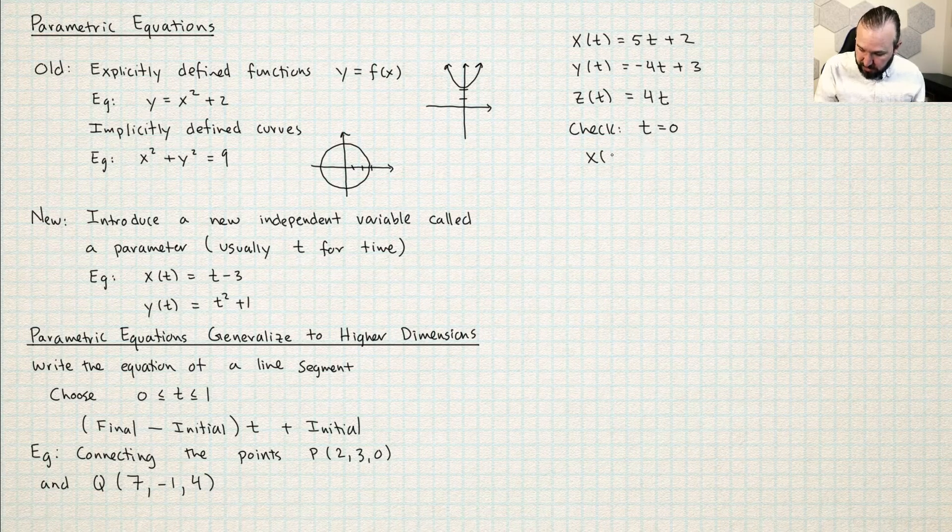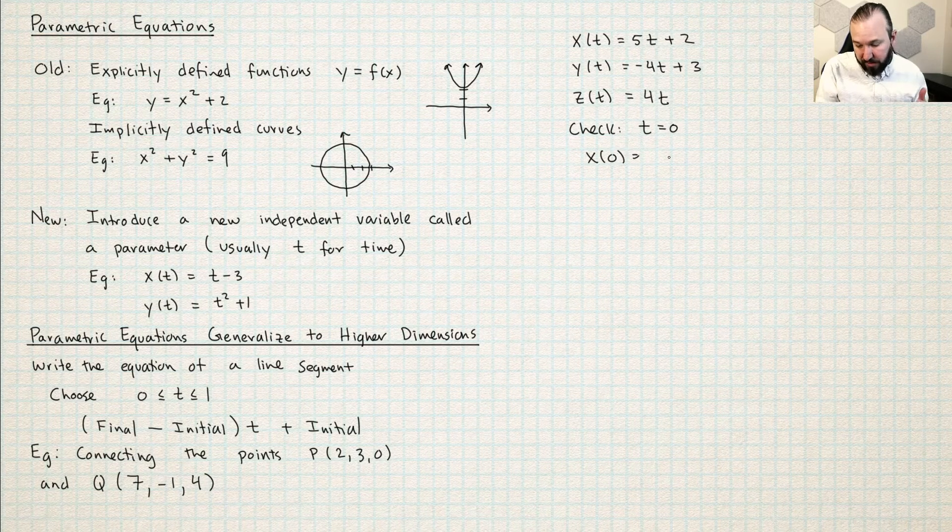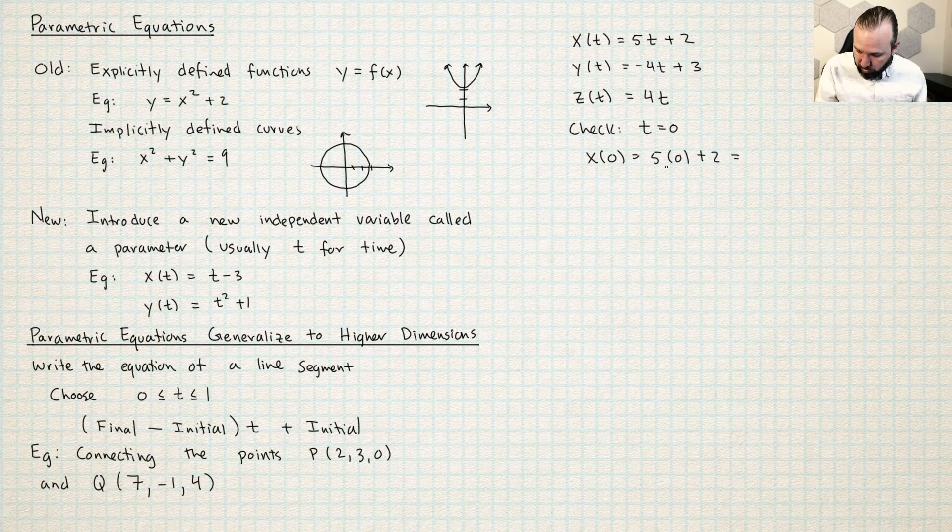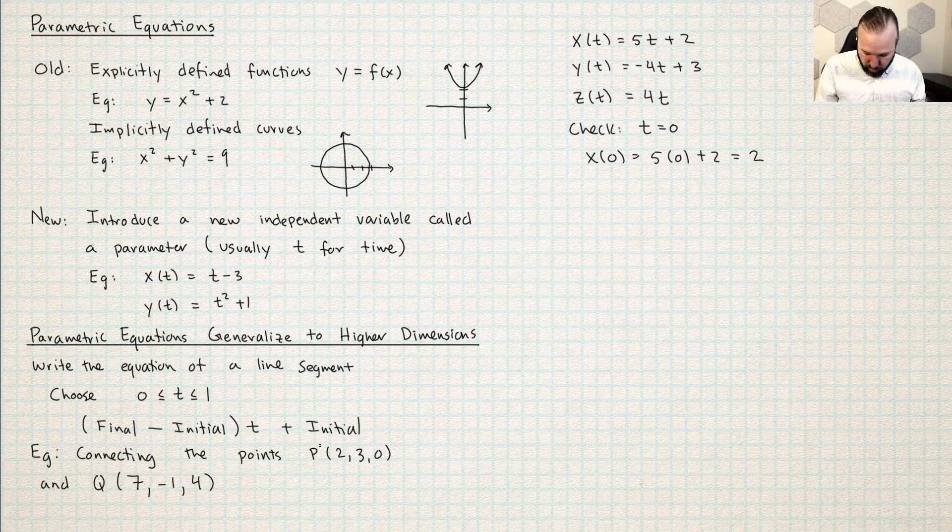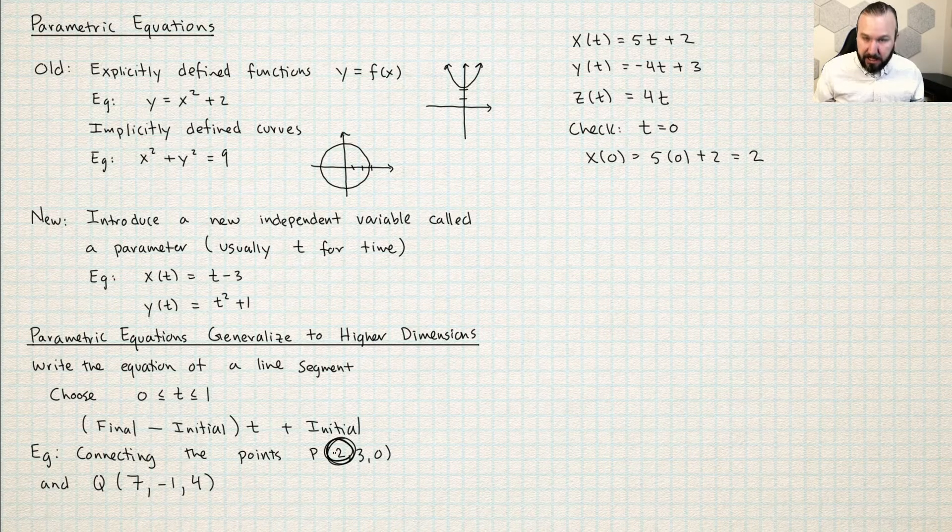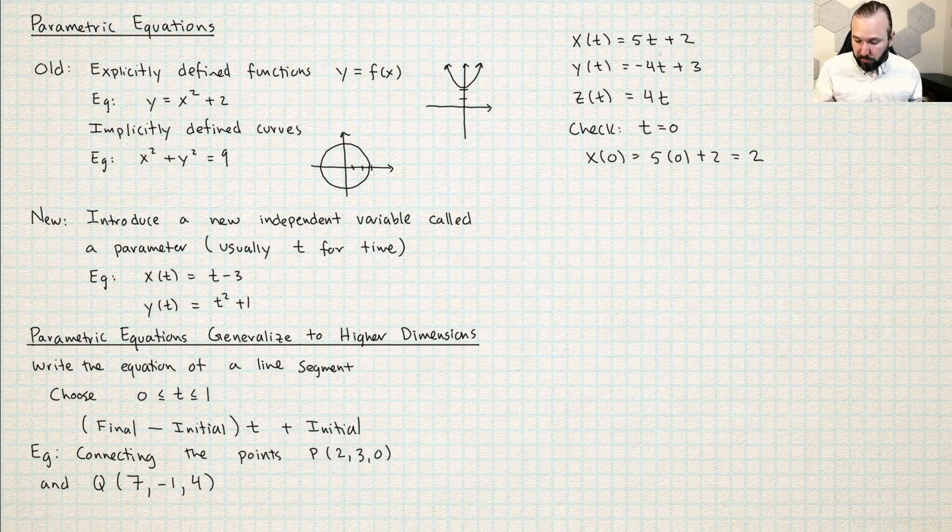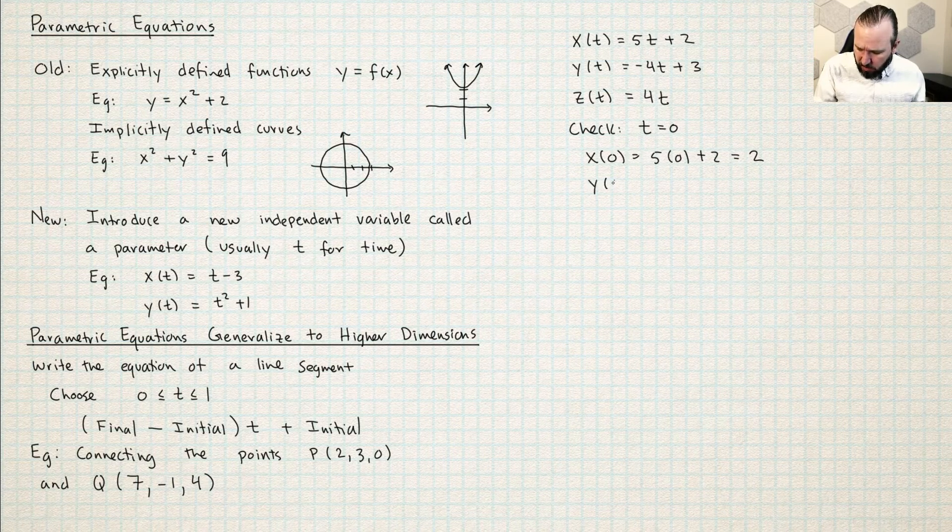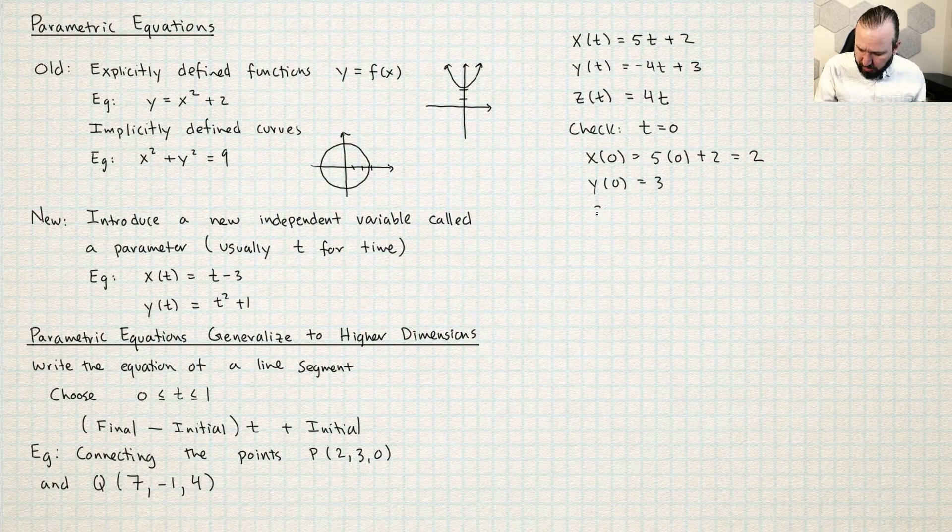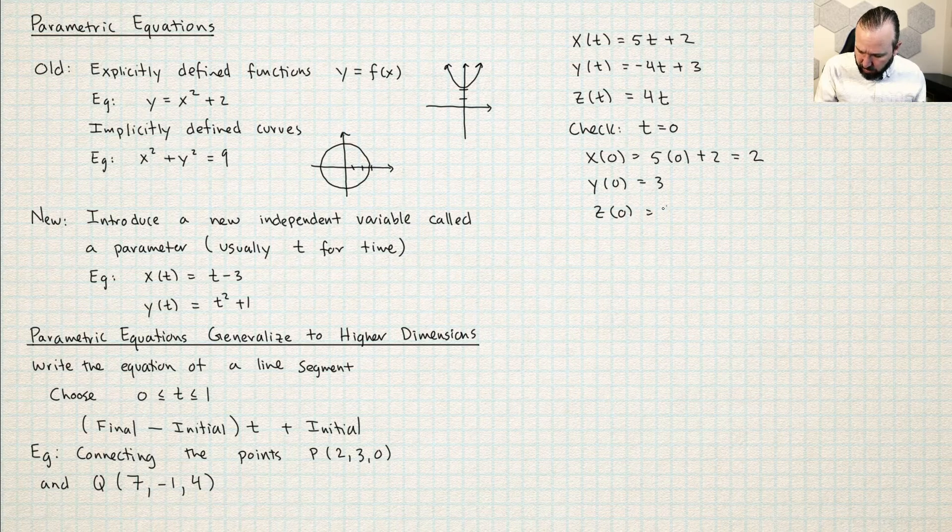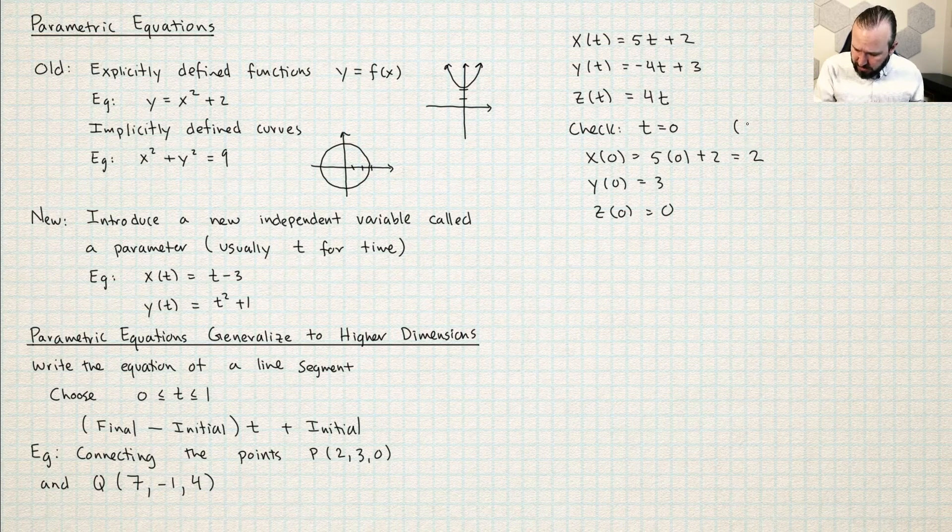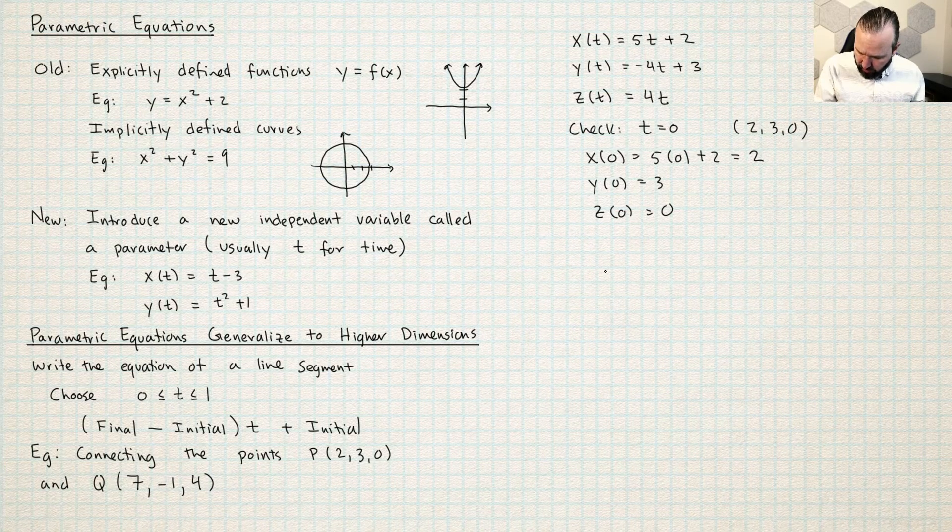So if I plug in t equals 0, then x of this was 5t and t is 0, so x of 0 will be 5 times 0 plus 2. So 5 times 0, 0 plus 2 is 2. And you can see I did get the x coordinate that I'm looking for. So in fact, if I just plug in 0 for all these t's, then y of 0 will be 3 and z of 0, 4 times 0 will be 0. So it worked at time 0. I did get the point (2, 3, 0).